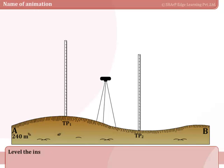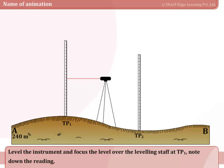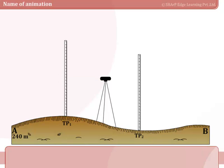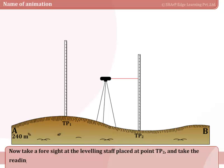Level the instrument and focus the level over the leveling staff at TP1. Note down the reading, say 1.986 meters. Now take a foresight at the leveling staff placed at point TP2 and take the reading, say 2.1 meters.